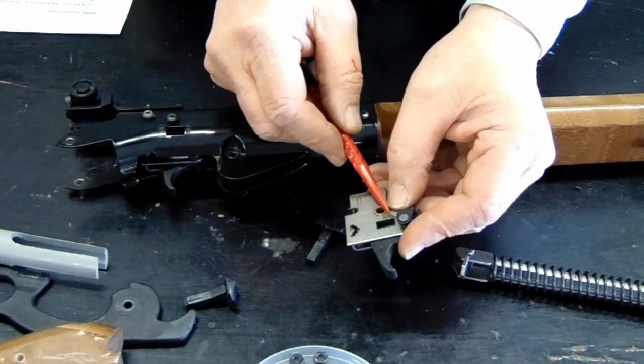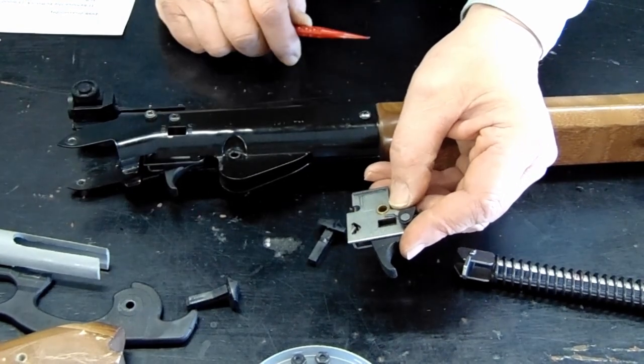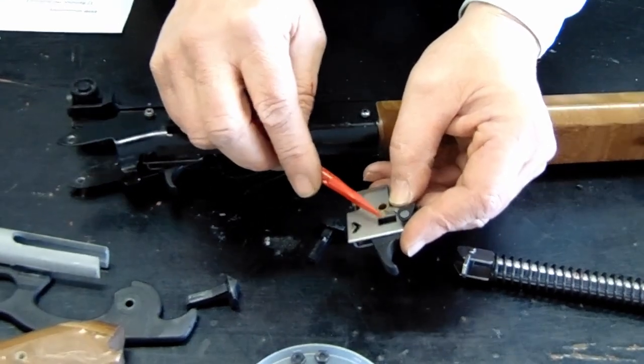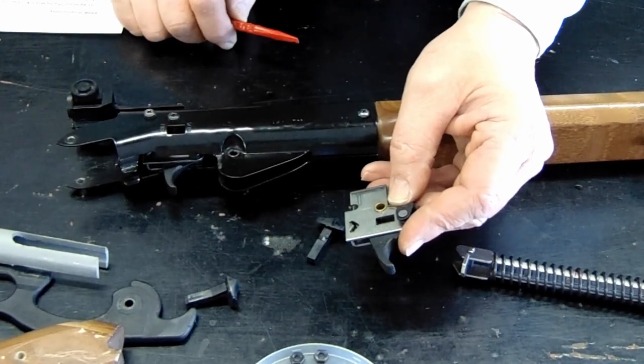You'll note that this spring sets about parallel to the top of the square hole. If you've got a spring that sets clear up here, it's going to be much more difficult to depress and get in there.